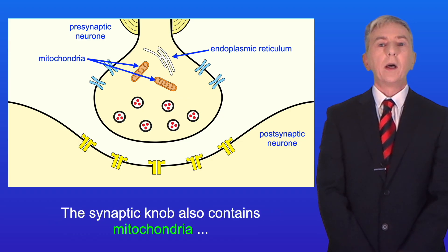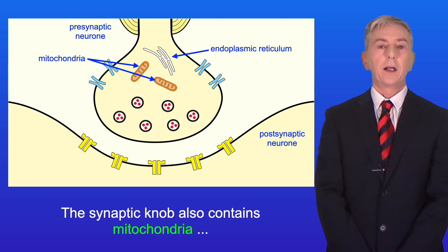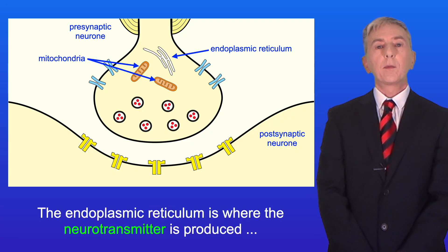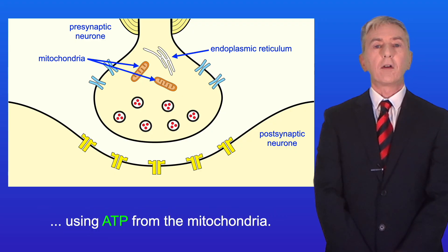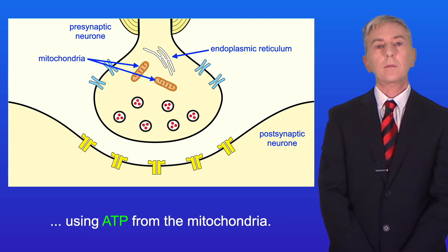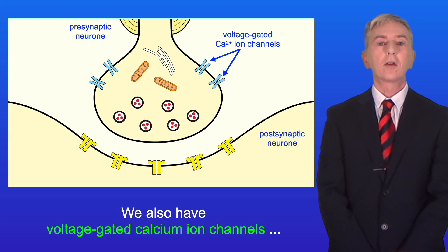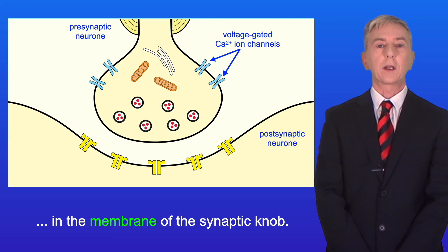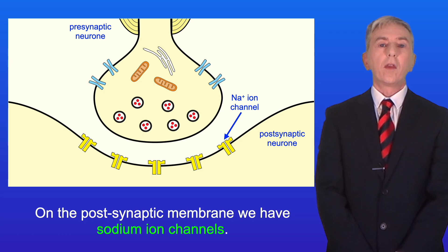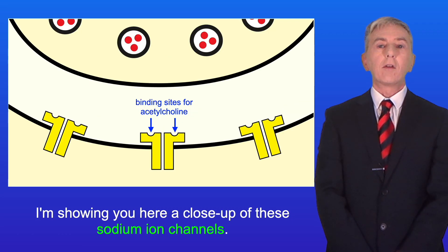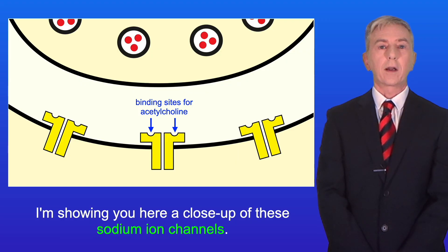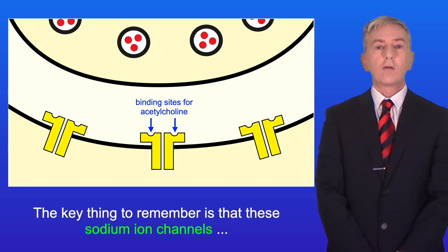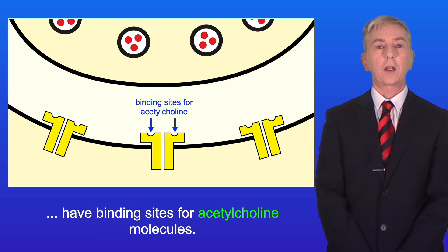The synaptic knob also contains mitochondria and endoplasmic reticulum. The endoplasmic reticulum is where the neurotransmitter is produced using ATP from the mitochondria. We also have voltage-gated calcium ion channels in the membrane of the synaptic knob. On the post-synaptic membrane we have sodium ion channels. These sodium ion channels have binding sites for acetylcholine molecules.